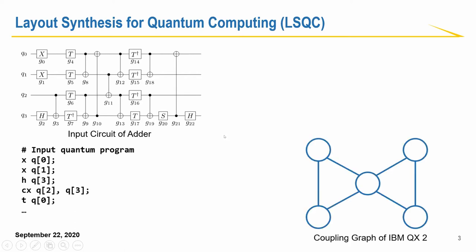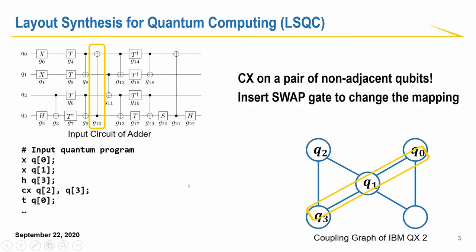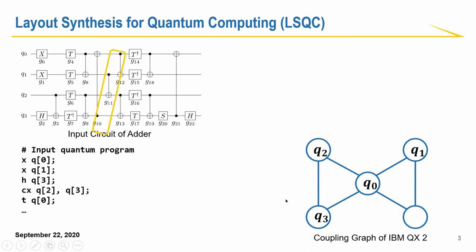To implement this quantum circuit or quantum program, we first have to map the logic qubits to the physical qubits. Single qubit gates are easy to handle. Basically, in current hardware, we can always implement them. But for two qubit gates, like CNOT gates here, there's some more concern. For this specific gate, it acts on a pair of adjacent qubits on this coupling graph of the device. So it's okay. However, for this case, it's on Q3 and Q0, and they are non-adjacent. So we have to swap them with a specific gate called swap gate. And then they are adjacent. So we can implement that CNOT gate.